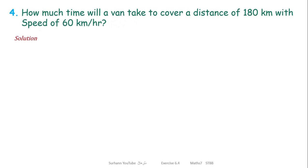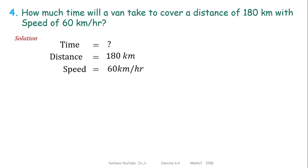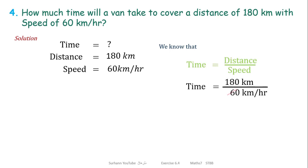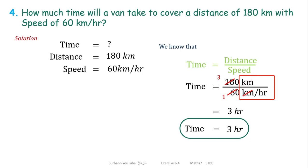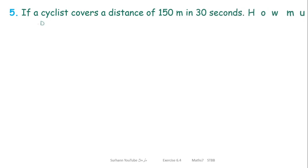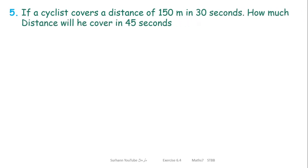Similarly, see problem number 4 of Exercise 6.4. Here we have to find time. Distance is 180 kilometers and speed is 60 kilometer per hour. Using the time, distance, and speed formula, putting in the values, we get time equals 3 hours. Units also work out perfectly — we get hours.